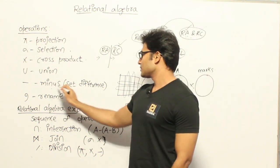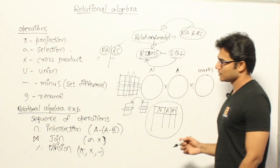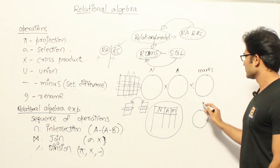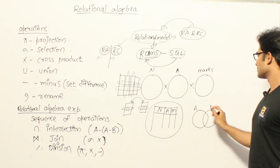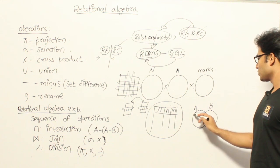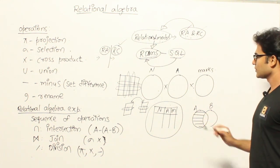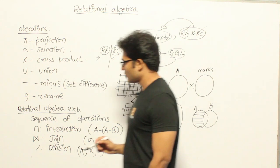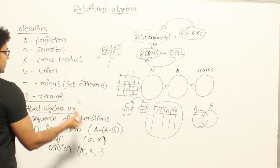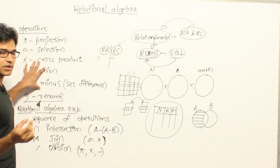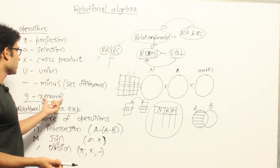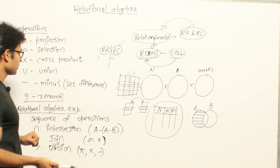The next operation is minus, or set difference — the same set difference from set theory. If you have table A and table B, then A minus B gives you the tuples that are present in A but not in B. The next operation is rename. Sometimes we want to save the result of an operation for later use, or rename a table itself, and for that we use the rename operation.